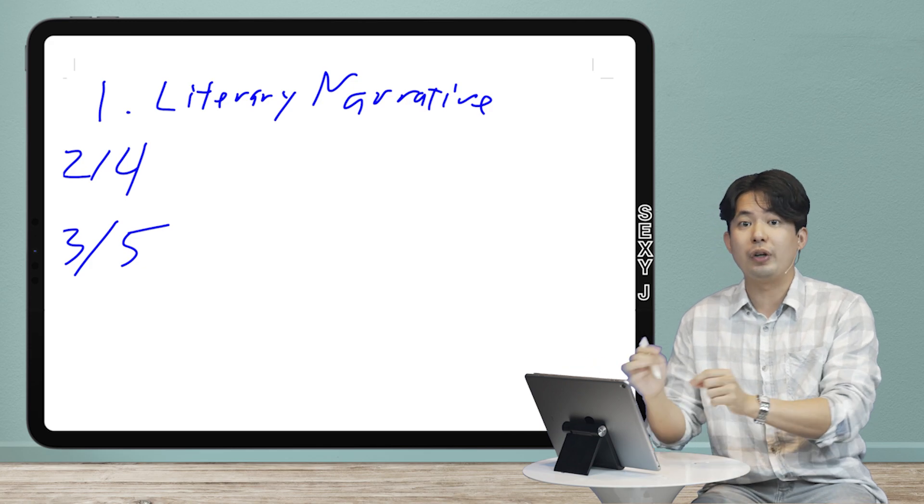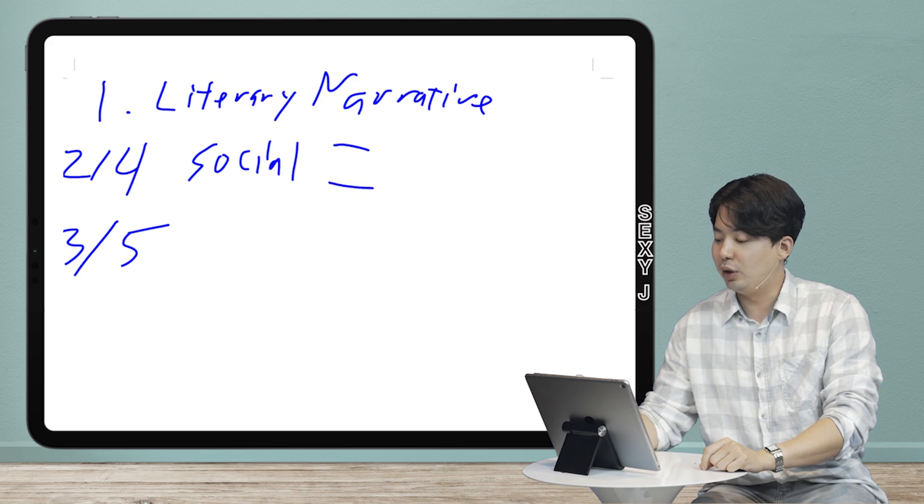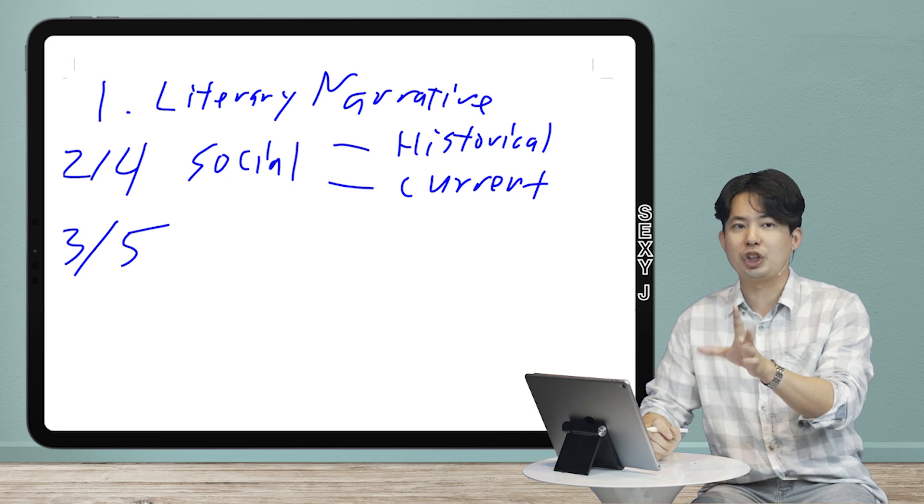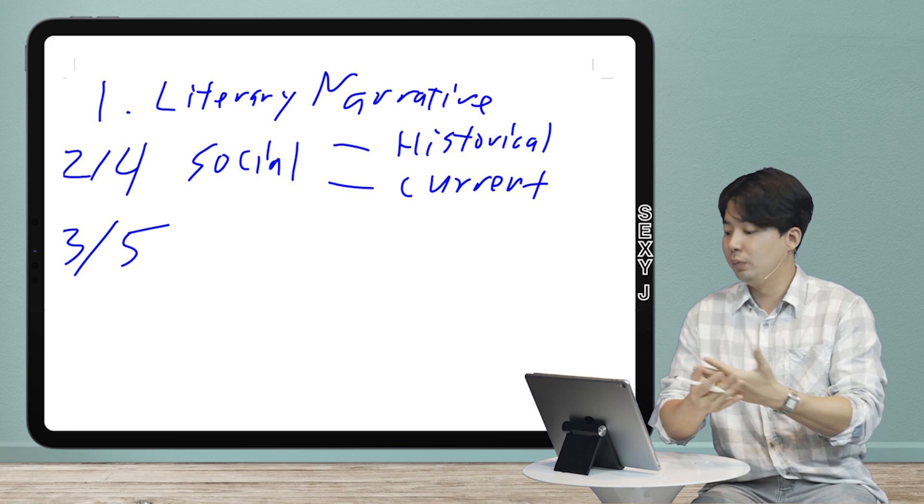Passages two and four, these are interchangeable. These are going to be what I call the social passages. And within those, we have the historical and then we have the current. So there is no pattern to which one's going to be two, which one's going to be four. Two and four, they're going to be social. One of them historical, one of them the current.